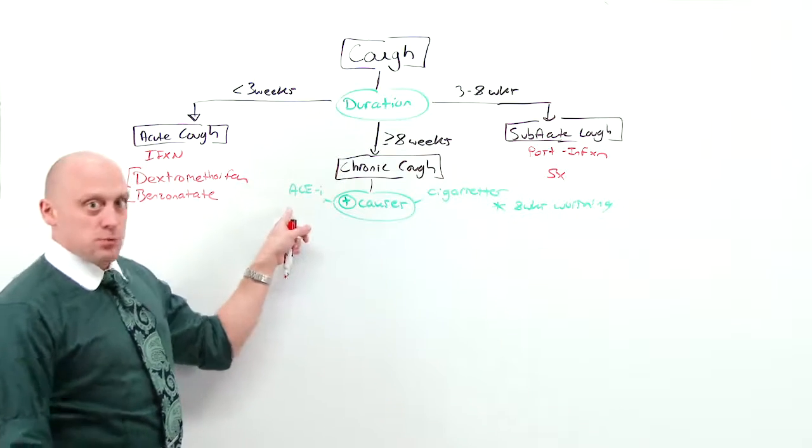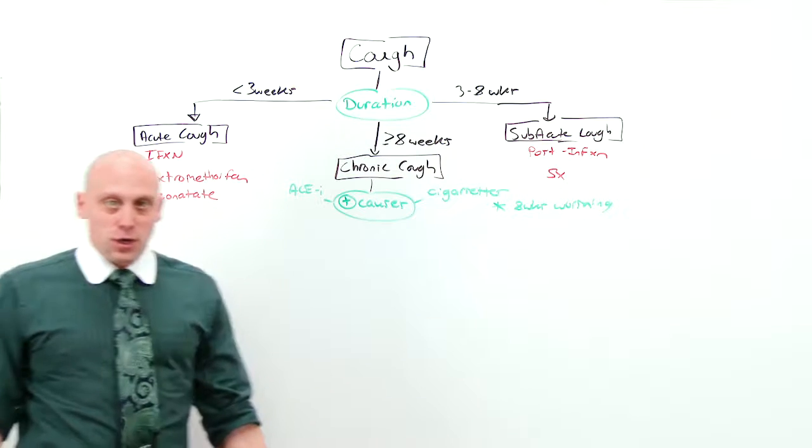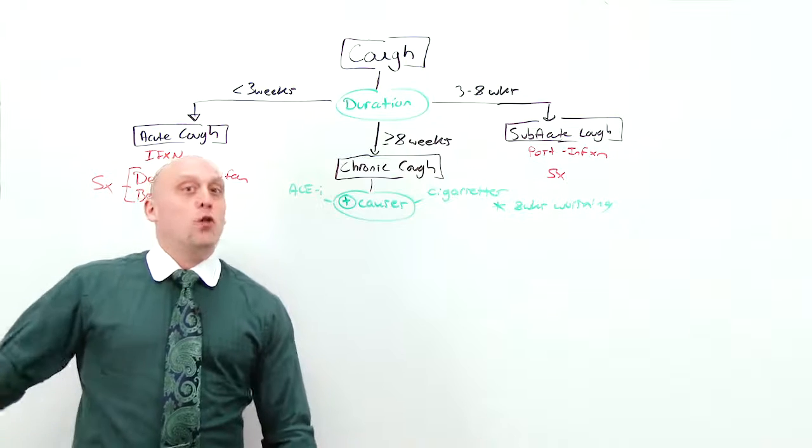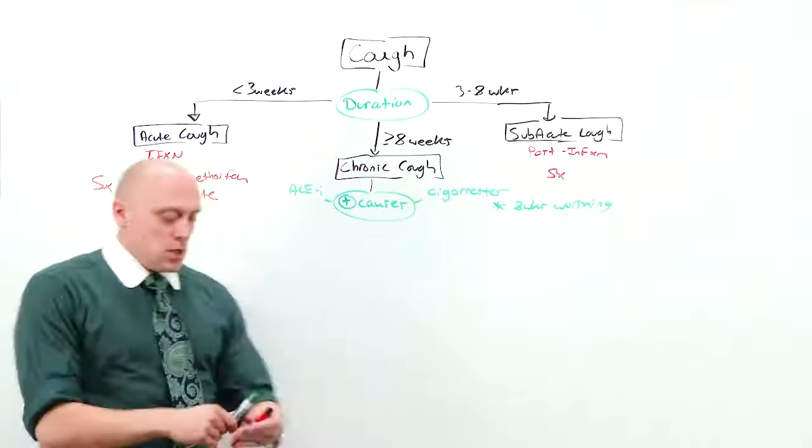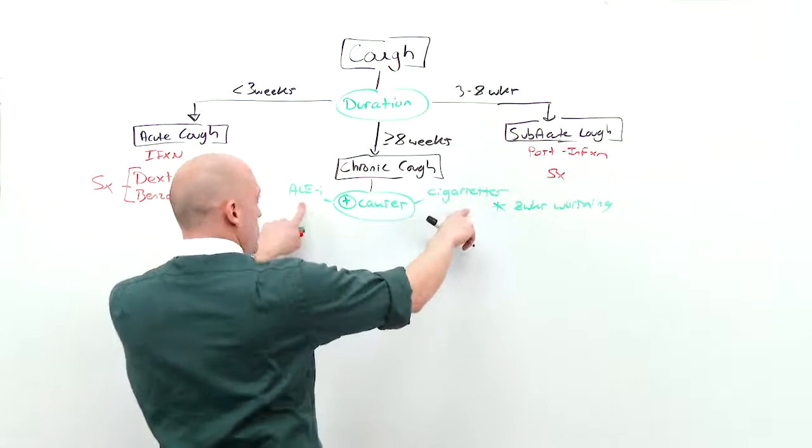If they have an ACE inhibitor, change them to an ARB. If they have something in their history which is going to cause the cough, you already know they have it. You're not going to be doing this diagnostic workup. So you look first for ACE inhibitors or cigarettes, fix those.